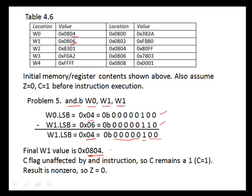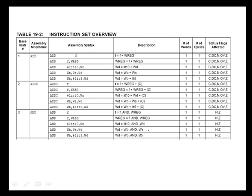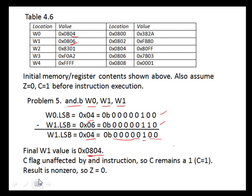The most significant byte of W1 is unaffected. In terms of flags, the AND instruction only affects the negative and zero flags. Since the carry flag is unaffected and was 1 on entering instruction execution, it remains 1. The result is non-zero, so the zero flag is false, or 0.